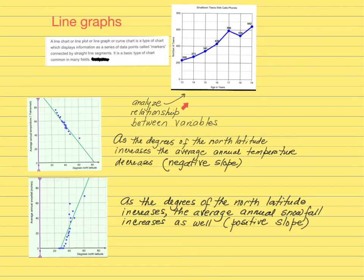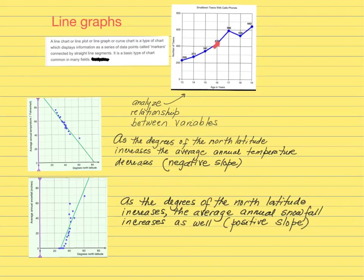For example, over here you are graphing the age of the children on the x-axis and the number of teens on the y-axis. From age 13 all the way through 17, if you analyze this segment of your line graph, you can say that as the age of the teenagers is increasing, you're going to have more kids in that range.